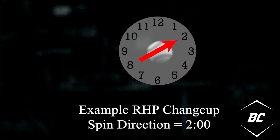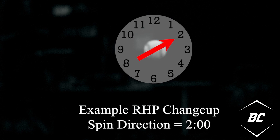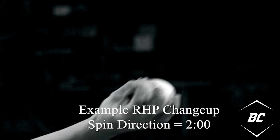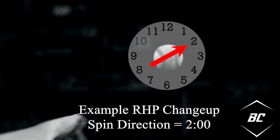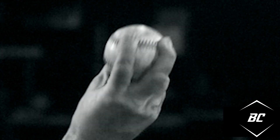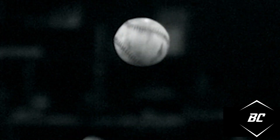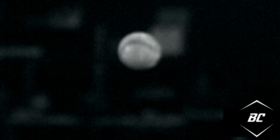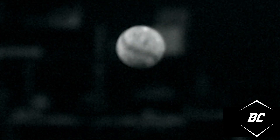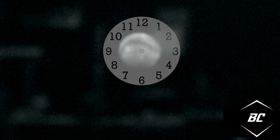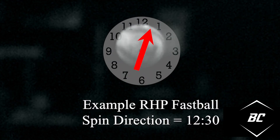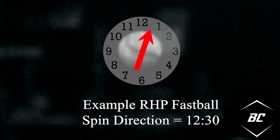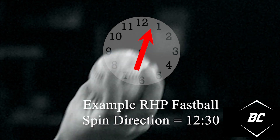Here we have a right-handed pitcher who throws a fastball overhead. As you can see, the ball has backspin, and compared to the clock it is spinning closest to the 12:30 marker. Thus, the spin direction of this pitch would be 12:30.